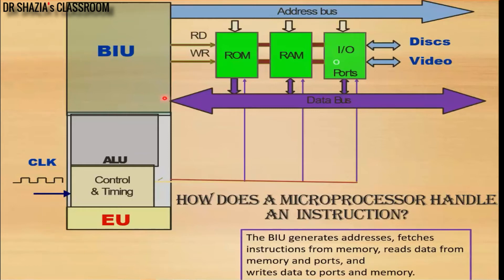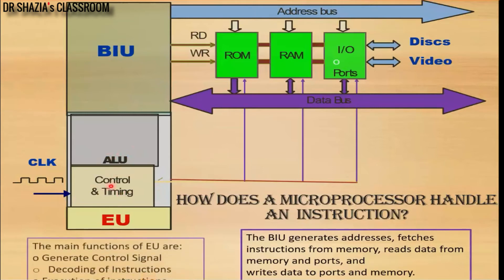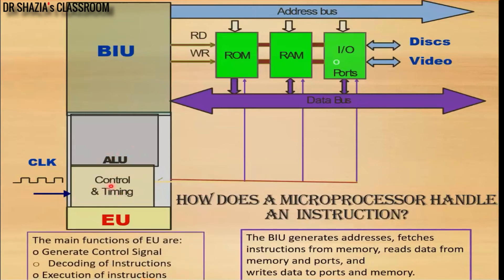The BIU basically generates an address, fetches the instruction from memory, performs read or write operations on ports, and writes data to ports and memory. The Execution Unit contains a control and timing unit, an instruction decoder, and an arithmetic and logical unit. The main function of the Execution Unit is to generate control signals, decode the instruction, and then execute the instruction.